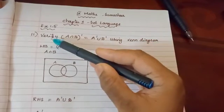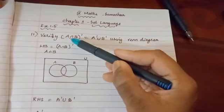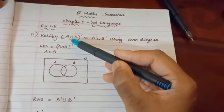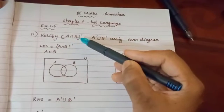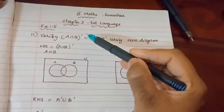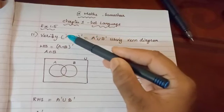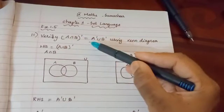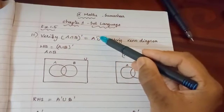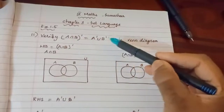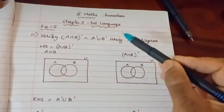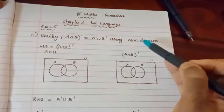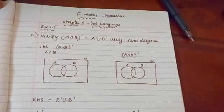We need to verify that (A intersection B) whole complement is equal to A complement union B complement, using a Venn diagram.